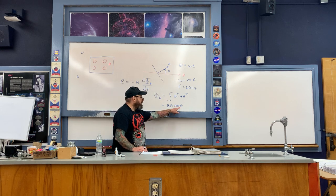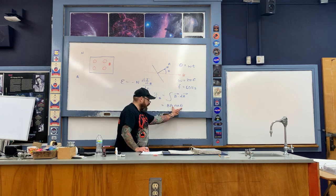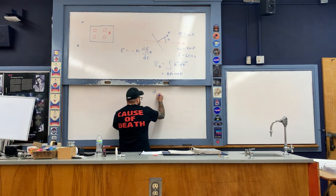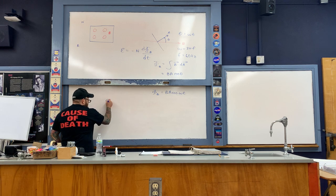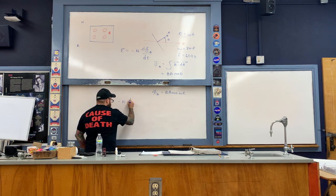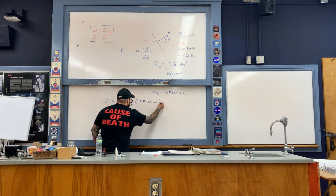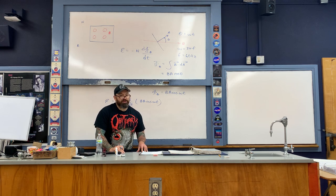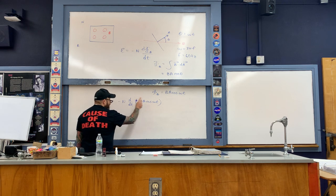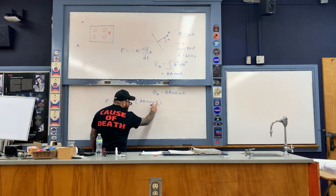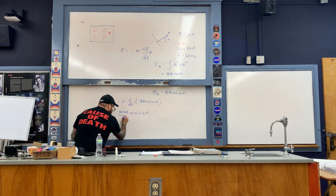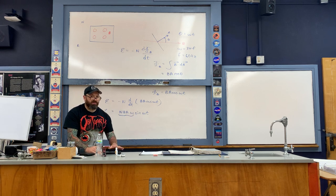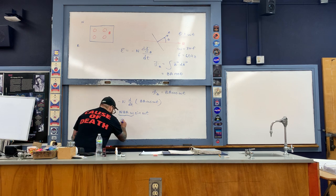Since theta is a function of time — specifically θ = ωt — the flux becomes B·A·cos(ωt). The induced EMF ε is then negative N times the derivative of this expression with respect to time. B and A are constants, so we differentiate the cosine: the derivative of cosine is negative sine, the negative signs cancel, and the chain rule brings out an ω in front, giving ε = NBAω·sin(ωt).